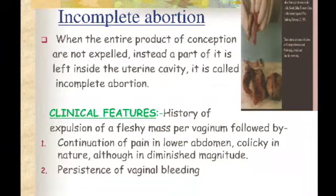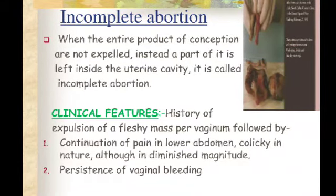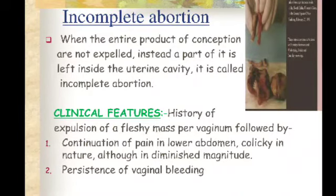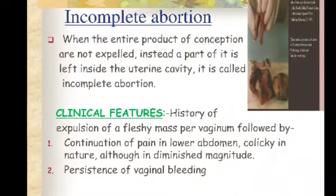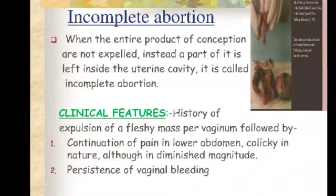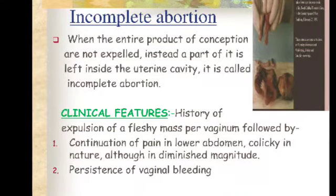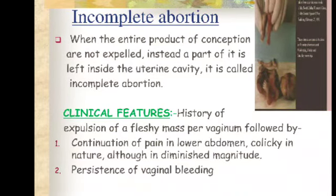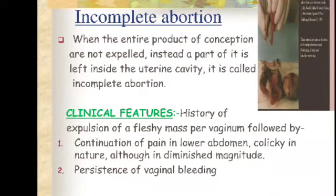The clinical features include history of expulsion of a fleshy mass per vagina, followed by continuation of pain in the lower abdomen of a colicky nature, although in diminished magnitude. There is also persistence of vaginal bleeding, which continues.